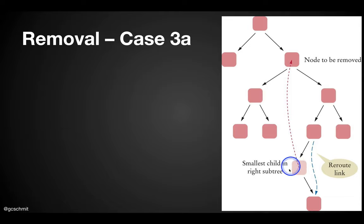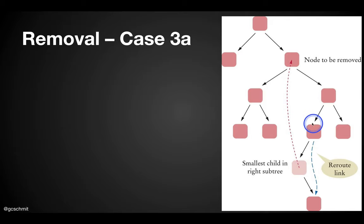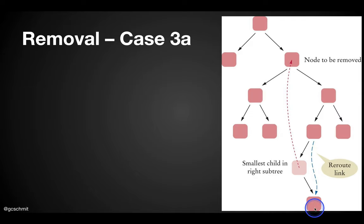So once we find the least child in the right subtree, we want to put it up here in our tree. But it itself might have a child — but only a right child. So we have to do something with it. What we do with its child is we link it to the smallest child's parent. The left child used to be this node, but we're going to move it up here, so now the left child of the parent will be this node instead. That's how we have to do it.